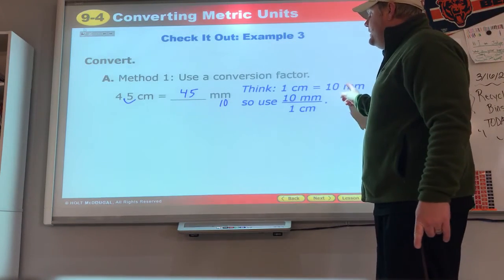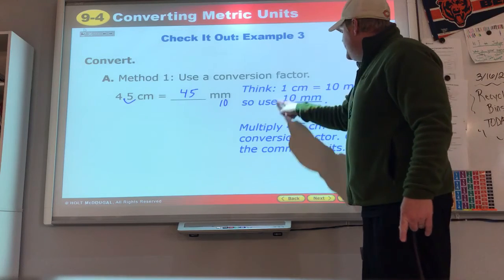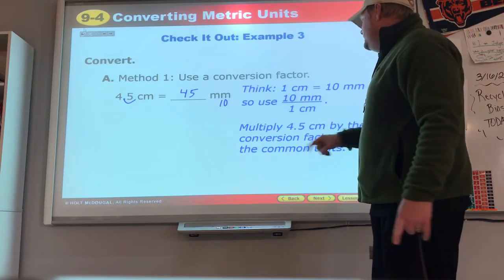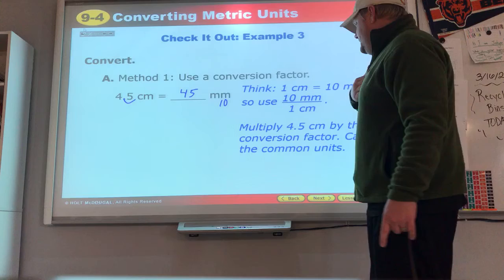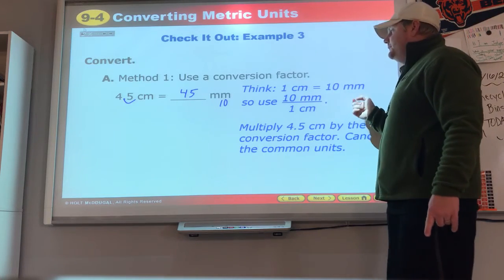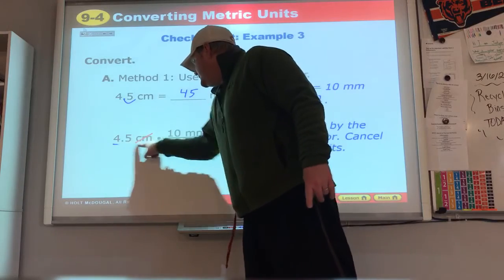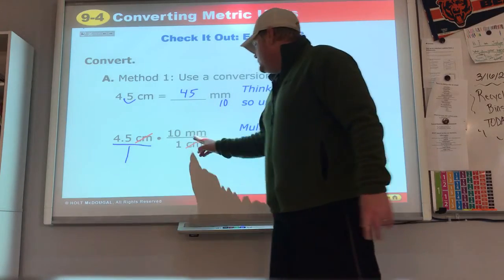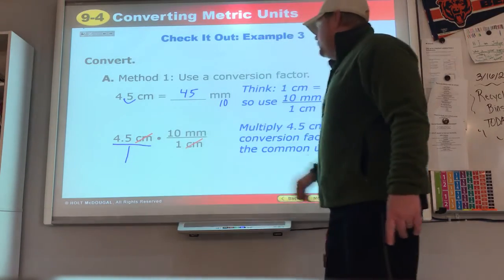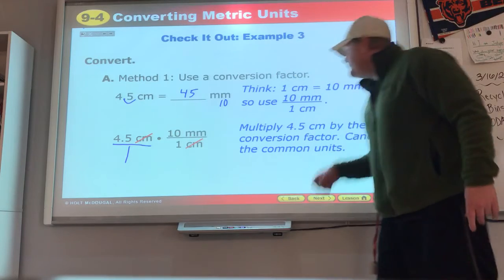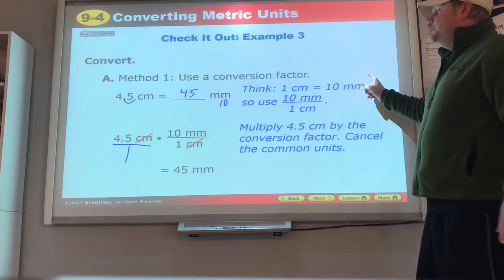Let's go ahead and see their conversion factor. See how they put that 10 above that one? 10 millimeters equals one centimeter. That's like a fancy one. We do that. I always like to think of it as a fraction, so my units can cancel. 4.5 times 10 is 45 millimeters.